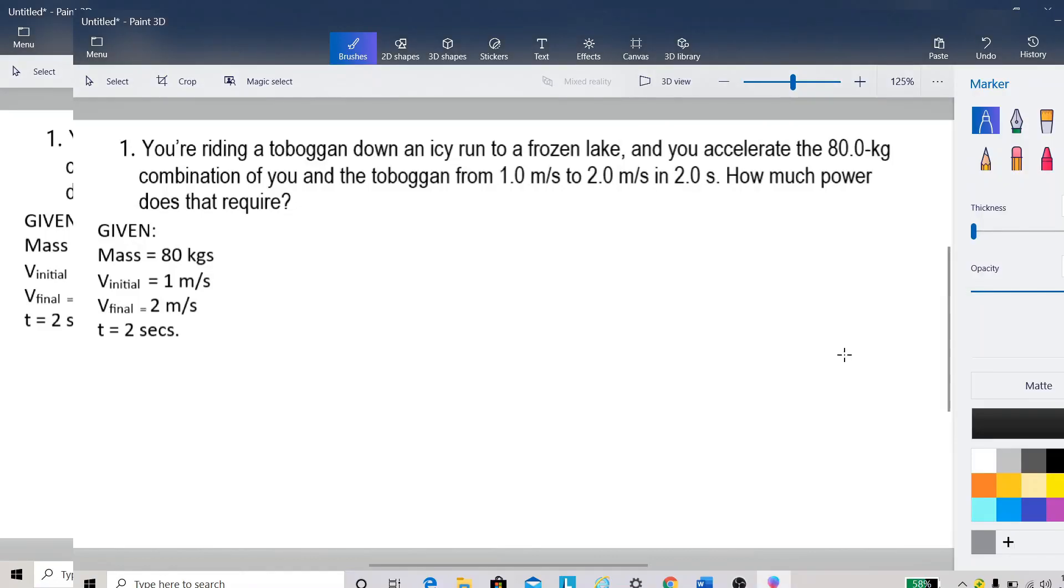Okay, let us try to solve problem number one. You are riding a toboggan down an icy run to a frozen lake and you accelerate the 80 kilogram combination of you and the toboggan from one meter per second to two meter per second in two seconds. How much power does that require?